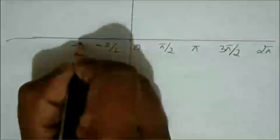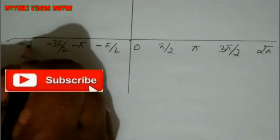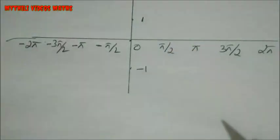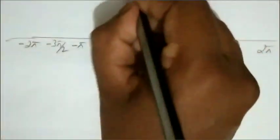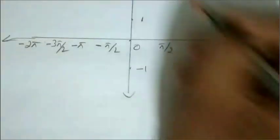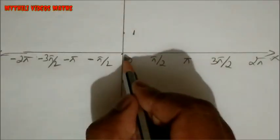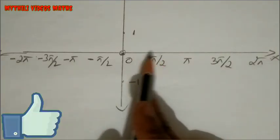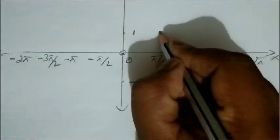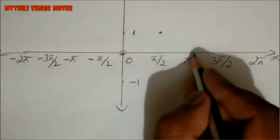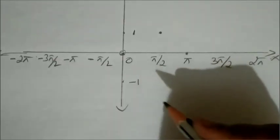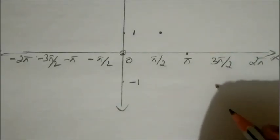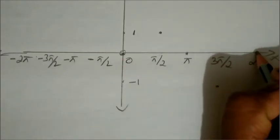On the negative x-axis side, we mark minus π/2, minus π, minus 3π/2, and minus 2π. The points are: at 0, 0; at π/2, y is 1; at π, y is 0; at 3π/2, y is minus 1; at 2π, y is 0. Then we plot these points on the x-axis and y-axis accordingly.